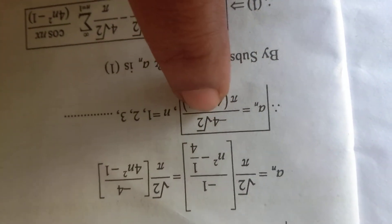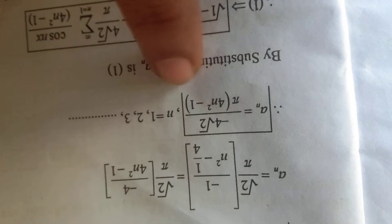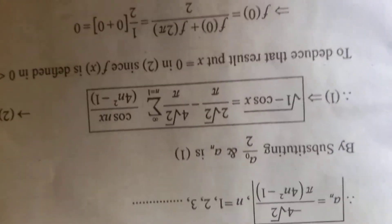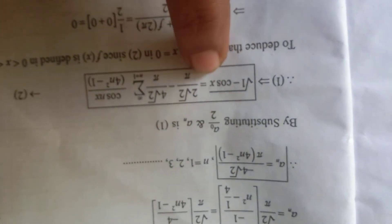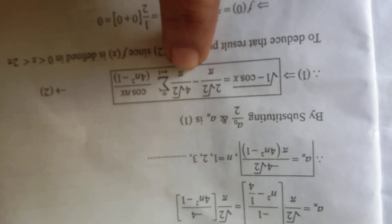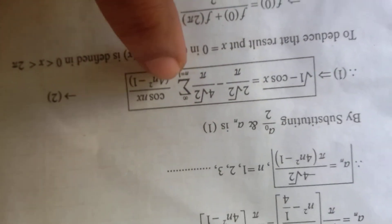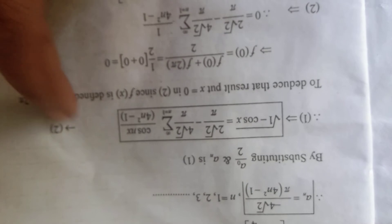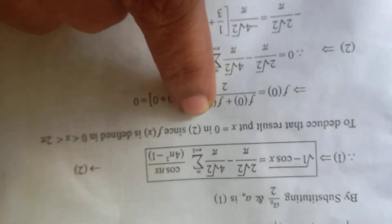Further, a of n equals square root of 2 by pi into minus 1 divided by n squared minus 1 by 4, which equals square root of 2 by pi into minus 4 divided by 4n squared minus 1. Once we simplify, the 4 in the denominator shifts to the numerator, giving a of n equals minus 4 root 2 divided by pi into 4n squared minus 1, for n taking values 1, 2, 3 and so on. Substituting a naught by 2 and a of n into the first equation, we get square root of 1 minus cos x equals 2 root 2 by pi minus 4 root 2 by pi times sigma n from 1 to infinity of cos nx divided by 4n squared minus 1.